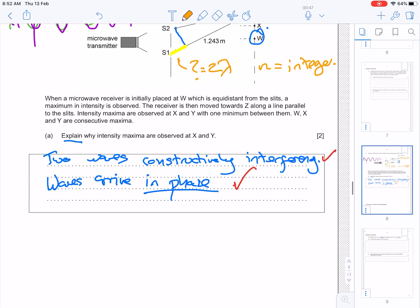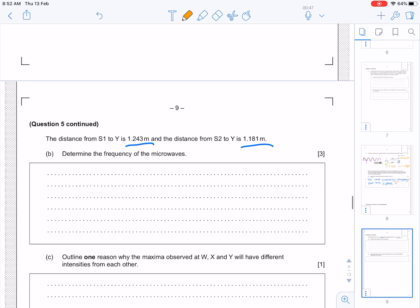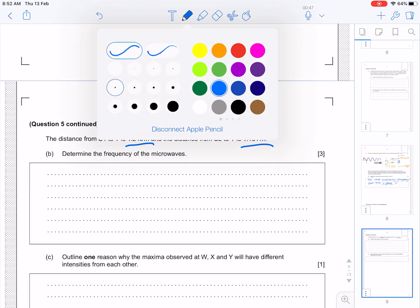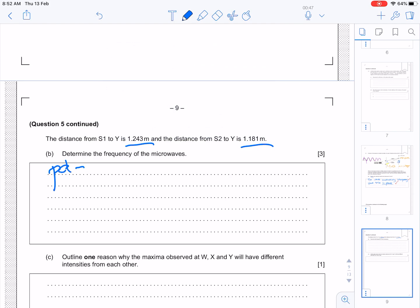So, if we go back to our question, we can see that the path difference is 1.243, take away 1.181, and we know that that path difference is equal to 2 lambda. Let me try that again.